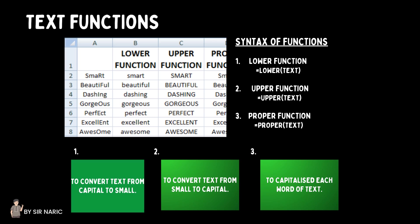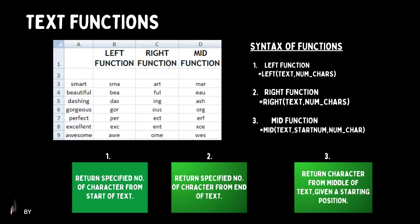Text functions syntax: To convert text to uppercase, use the UPPER function: =UPPER(text). To capitalize each word of text, use the PROPER function: =PROPER(text). The LEFT function returns characters from the left: =LEFT(text, num_chars). The RIGHT function: =RIGHT(text, num_chars). The MID function: =MID(text, start, num_chars).